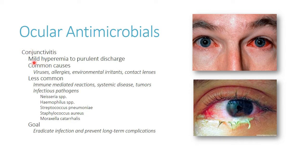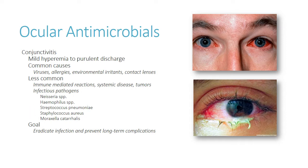As far as conjunctivitis goes, these patients will have mild hyperemia and purulent discharge. The most common causes are viruses — this is one of the few instances where giving an ocular antibiotic for a viral infection is okay, which I'll explain shortly. You can also have allergies, environmental irritants, contact lenses — and with contact lenses you should be worried about Pseudomonas. Less commonly, immune-mediated reactions, tumors, or systemic disease can cause conjunctivitis. Infectious pathogens range from Strep pneumo to Staph aureus to gram negatives like H. flu and Moraxella catarrhalis.